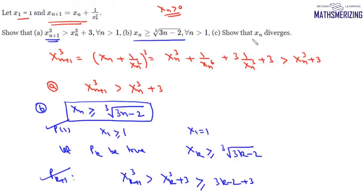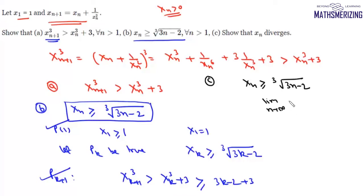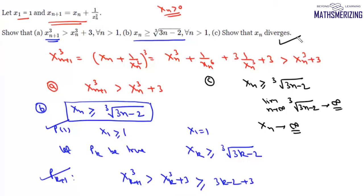For the third part, we show that xₙ diverges. In part b we showed that xₙ ≥ ∛(3n - 2). Taking the limit as n → ∞, ∛(3n - 2) diverges to plus infinity. Since xₙ ≥ ∛(3n - 2) and ∛(3n - 2) diverges to infinity, by the theorems on divergence we can conclude that xₙ also diverges to infinity.